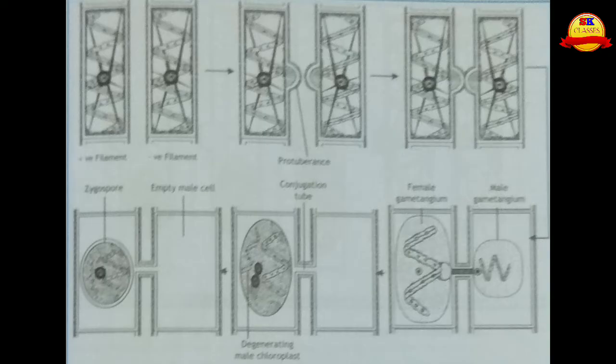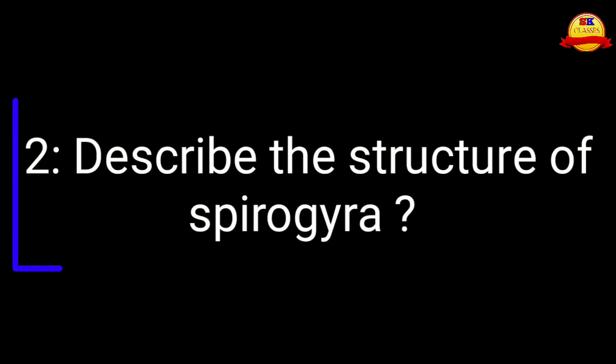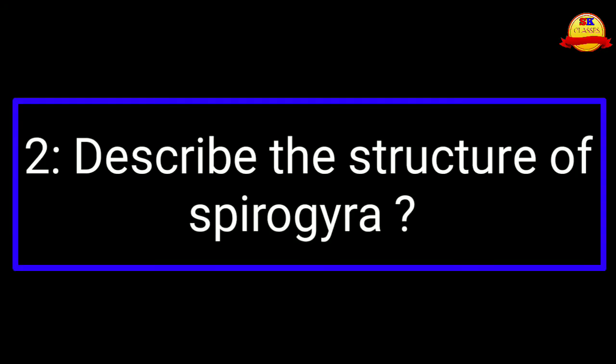This is the scalariform conjugation in Spirogyra, and here is the diagram of scalariform conjugation in Spirogyra. The next question is: describe the structure of Spirogyra.